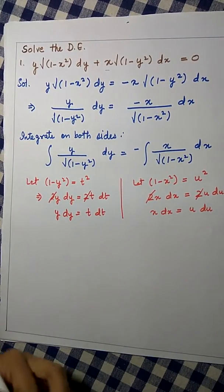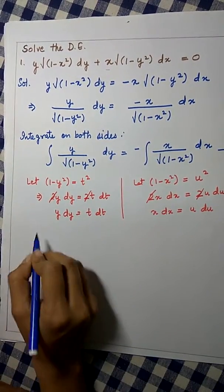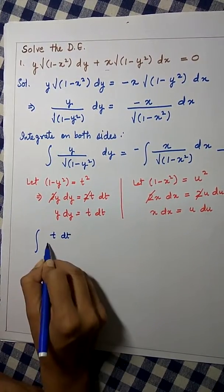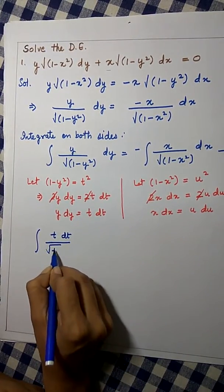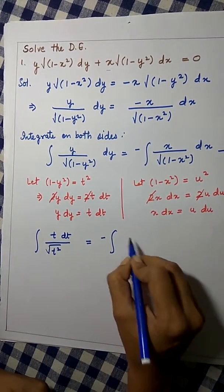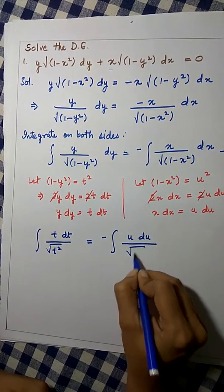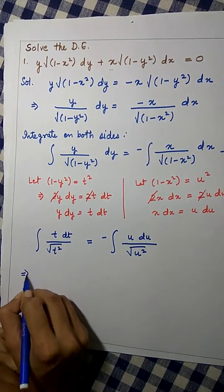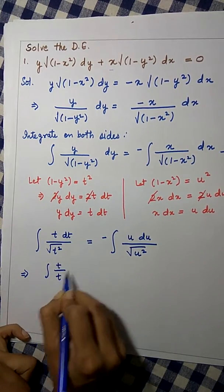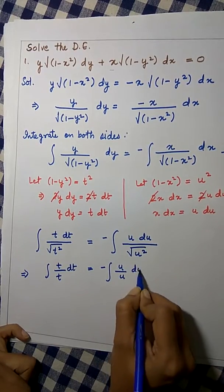Now, let us put the values in. So, we will get negative t dt upon root of t square, which equals minus negative u du upon root of u square. We will get t upon t dt equals u upon u du.